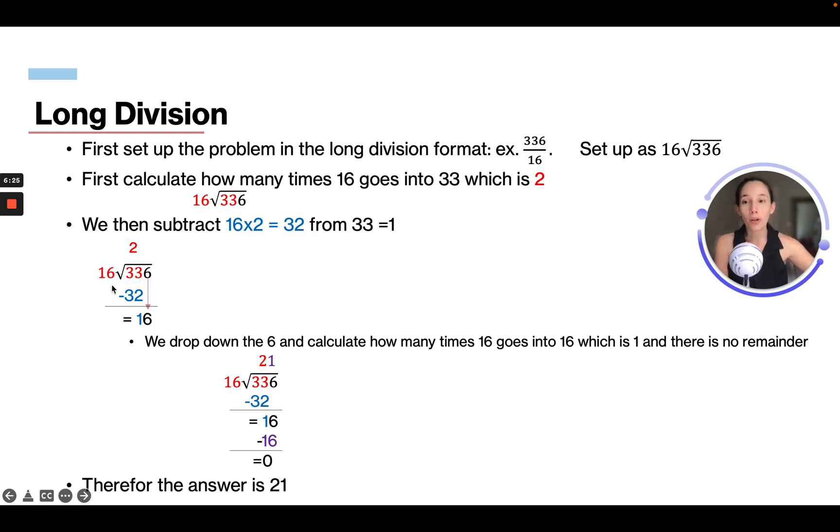So we're gonna write 2 above, and then we're gonna subtract 32 because 16 times 2 is 32. So then we're gonna be left with 1. Then what we do is we drop down the numbers that are left over. So right now we have a 6. We drop it down.